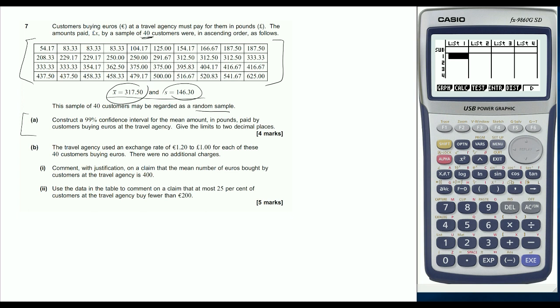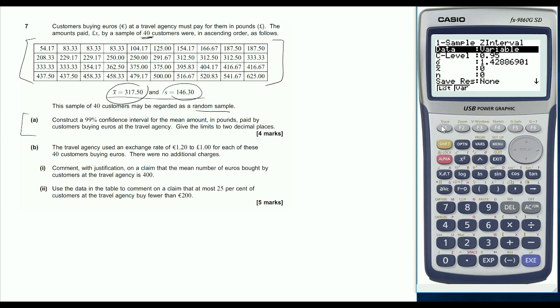In this question, I'm going to show you how we do this using our calculator. Very simply, it's interval, it's a Z interval when we've got one sample. The confidence level we're looking for is 0.99. Our sigma is 146.3, our X bar is the mean, 317.5,